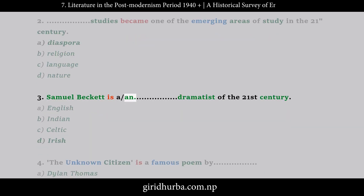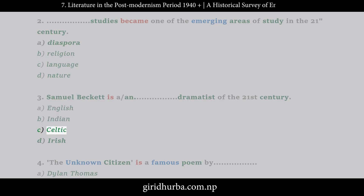Question 3: Samuel Beckett is a novelist and dramatist of the 21st century. A. English. B. Indian. C. Celtic. D. Irish.